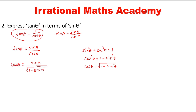So tan θ is now entirely in terms of sin θ only. This is the required result: tan θ = sin θ / √(1 - sin²θ). If the same question asks to express tan θ in terms of cos θ, we would change the sin θ using sin θ = √(1 - cos²θ) and substitute in terms of cos θ. Is it clear?